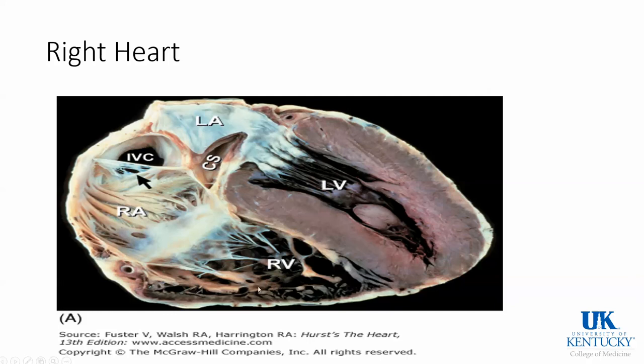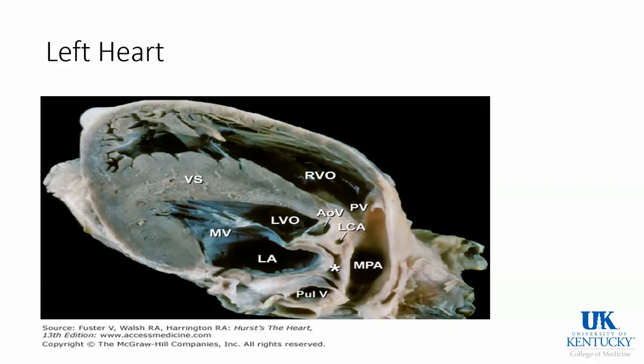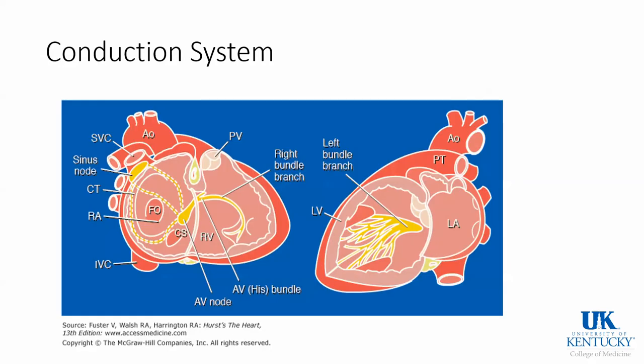Here is a cadaver image of the right heart where you can see the papillary muscles and the moderator band. The left heart has four pulmonary veins draining oxygenated blood into it. There's a left atrial appendage — a spot where clots can sometimes form in patients with atrial fibrillation. Blood then passes through the mitral valve into the LV, where there are papillary muscles before blood leaves to go to systemic circulation.